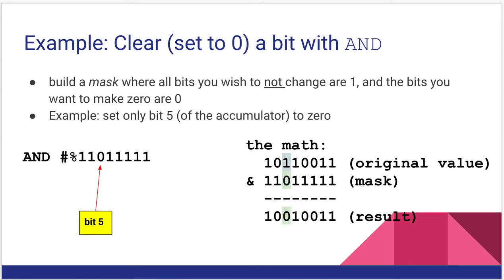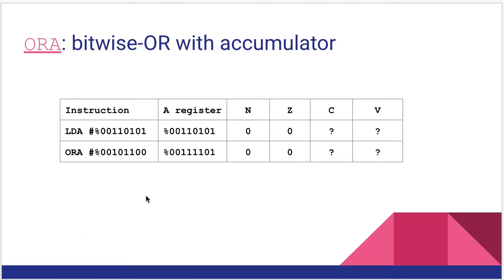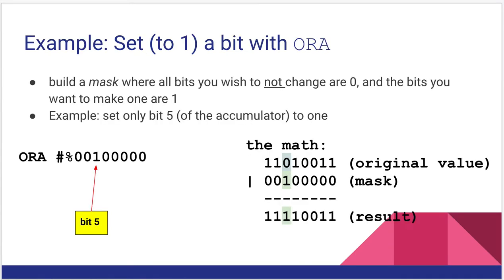Let's look at the OR version — ORA, or with accumulator. Same idea as the bitwise AND except now it's a bitwise OR. I'm loading a value into my A register and calling OR with accumulator with some number, again shown as bits. Everywhere there is a one in the OR operand, that bit gets set to one, and anywhere there's a one in the accumulator already it stays one. If you do the bitwise OR between those two, this is what you should get.